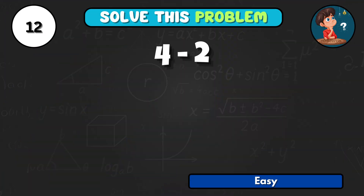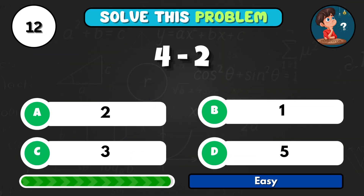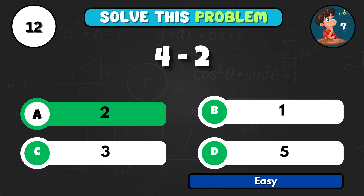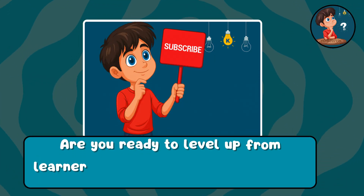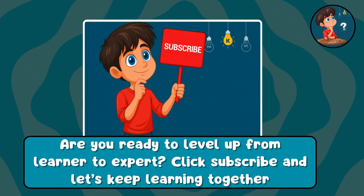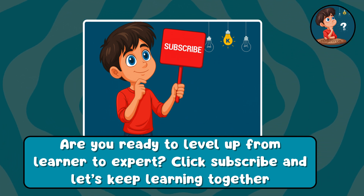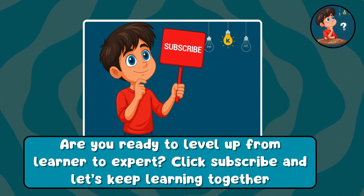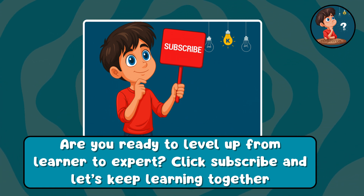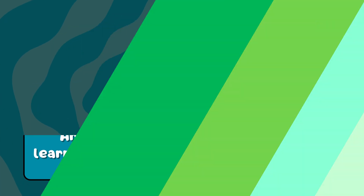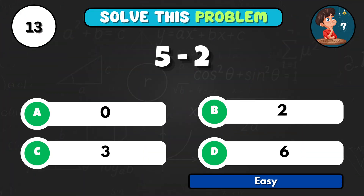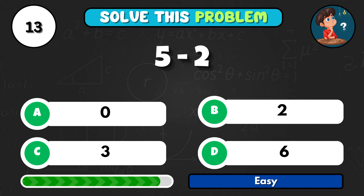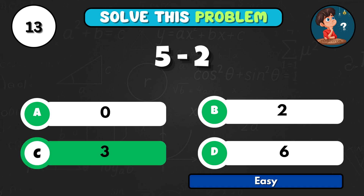5 minus 2 equals what? 5 reduced by 2 is equal to… The right answer is C3.